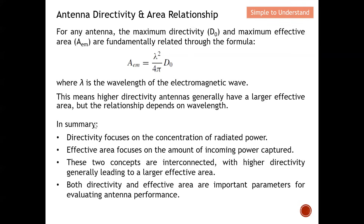In summary: directivity focuses on the concentration of radiated power in a certain direction, while effective area focuses on the amount of incoming power that the antenna captures. These two concepts are interconnected — higher directivity generally leads to a larger effective area, as seen from this direct proportionality relationship.